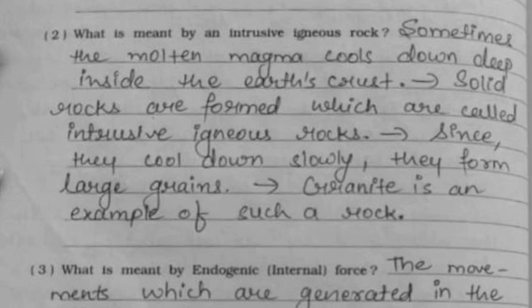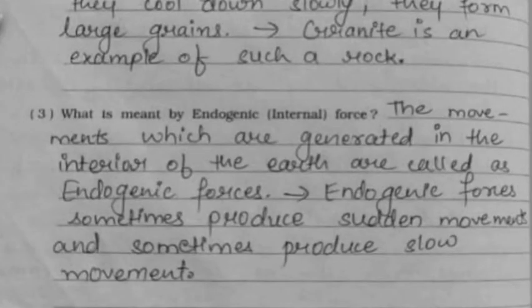Since intrusive igneous rocks cool down slowly, they form large grains. Granite is an example of such a rock. Third: What is meant by endogenic or internal force? The movements which are generated in the interior of the earth are called endogenic forces. Endogenic forces sometimes produce sudden movements and sometimes produce slow movements.